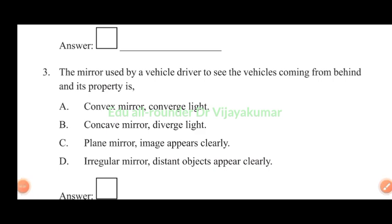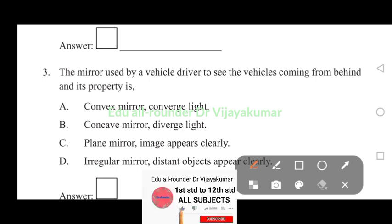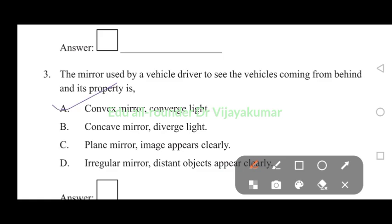The mirror used by the vehicle driver to see the vehicles coming from behind and its property is: convex mirror converges light, concave mirror diverges light, plane mirror image appears clearly, irregular mirror distant objects appear clearly. Convex mirror converges light. Option A is the right answer.